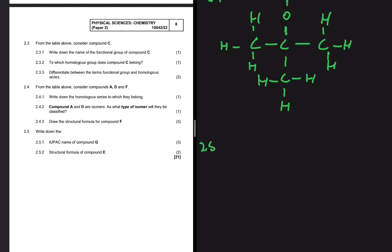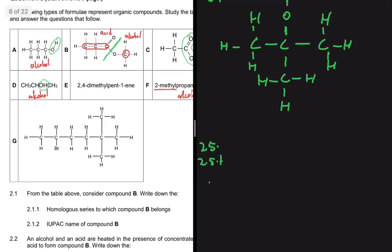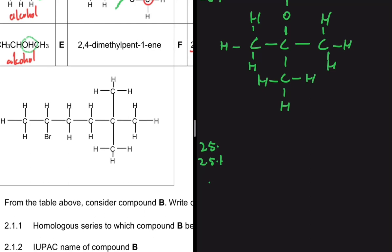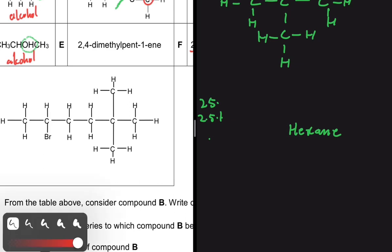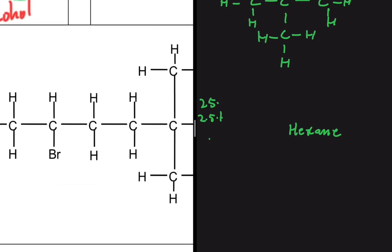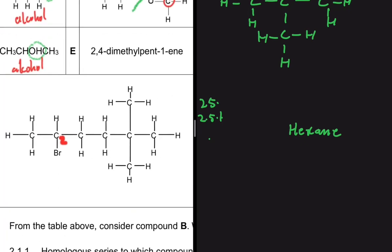For question 2.5, we look at compound G. The first thing to identify is the longest carbon chain — counting: one, two, three, four, five, six — that is 'hex,' so hexane. I also see 'Br,' which indicates a halogen (bromine). Now for the branches: if numbering from the left, bromine is on carbon two and we have dimethyl; if numbering from the right, dimethyl is on carbon two and bromine is further along.